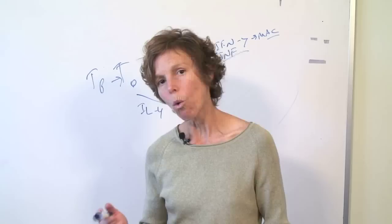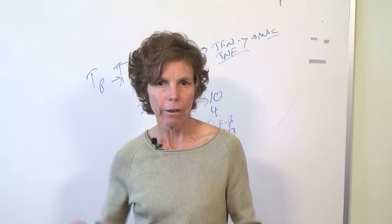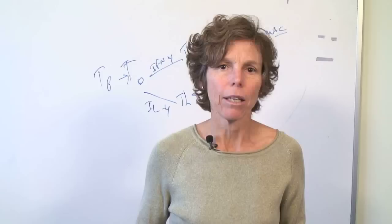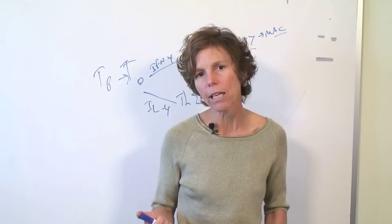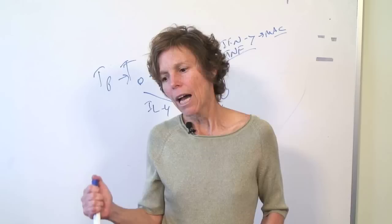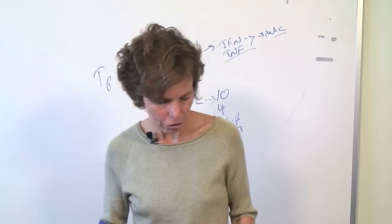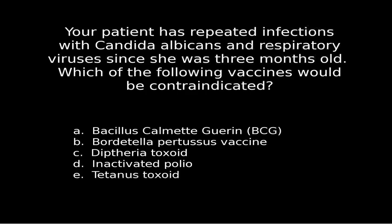You don't want to give someone with a cell-mediated deficiency a live vaccine — similarly, you'd never give a live vaccine to an HIV patient. Anytime I think of cell-mediated immune deficiency, I think of HIV as the classic example. Which of these is a live vaccine? BCG is a live vaccine, as are Sabin, varicella, measles, and rubella — though they're not listed here. So the answer is A: BCG.